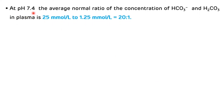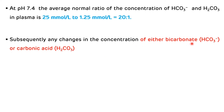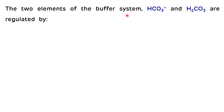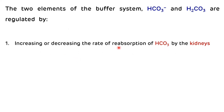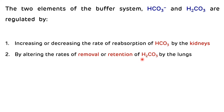At physiological pH 7.4, the average normal ratio of bicarbonate ion to carbonic acid in plasma is 25 mmol/L to 1.25 mmol/L — that is, 20:1. Any change in the concentration of either bicarbonate or carbonic acid will change this ratio and cause a change in pH. The two elements are regulated by altering the rate of reabsorption of bicarbonate by the kidneys and by altering the rate of removal or retention of carbonic acid by the lungs.